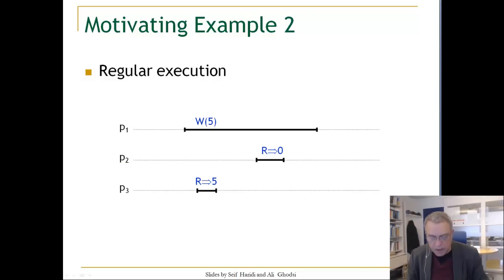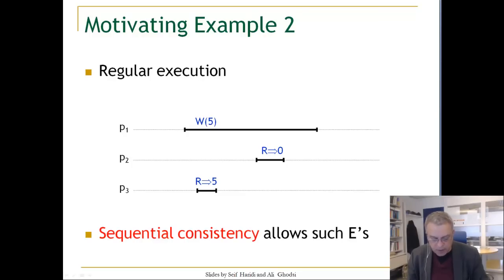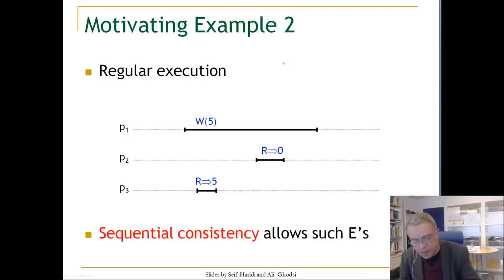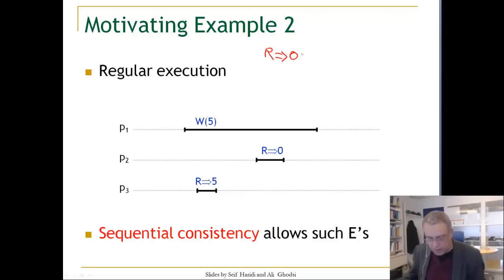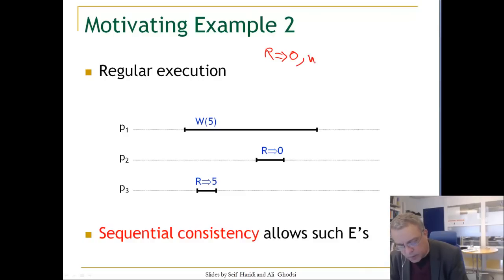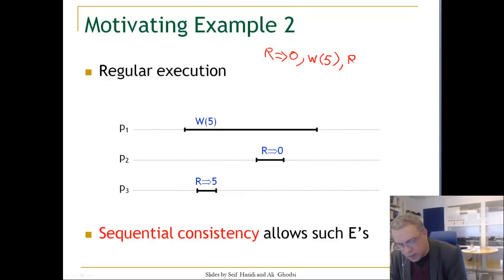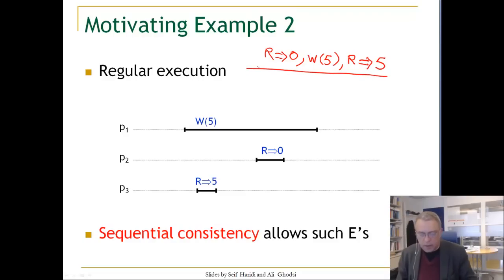Read zero is not allowable. Here is an execution that is both a regular execution and a sequentially consistent execution, because we can simply first perform the read zero, and after that do the write five, and after that do the read five. This is a sequential execution, and because we have only one operation on each node here, there are no node-local order constraints that are violated.